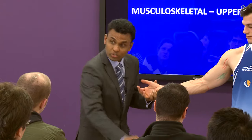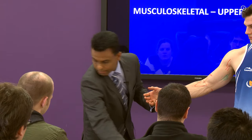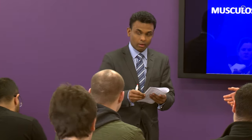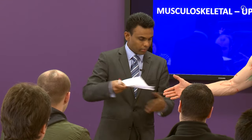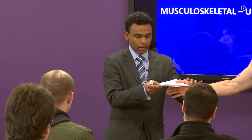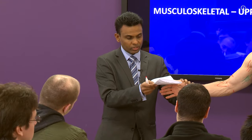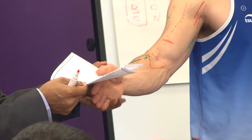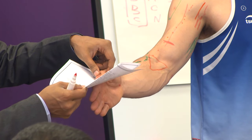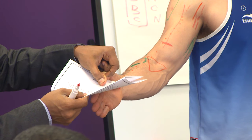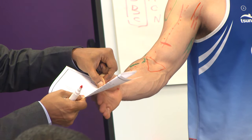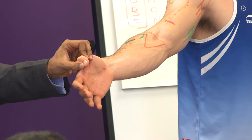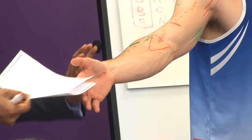Then you do the Froment sign, which is placing a card between the thumb and the index finger. You ask the patient to hold the card, then pull it out. If the patient has an ulnar nerve injury, the adductor pollicis is affected and they will be unable to hold the card. They will try to hold it by flexing the IP joint — that is a positive Froment sign, testing for adductor pollicis.